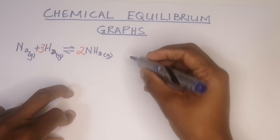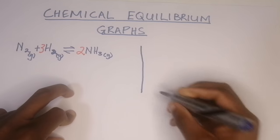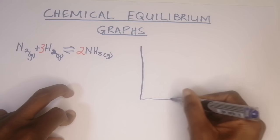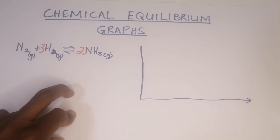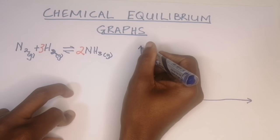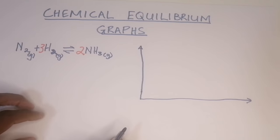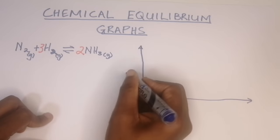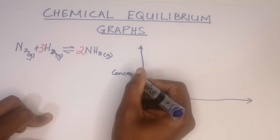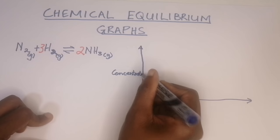There are two types of graphs you will always find in chemical equilibrium. The first type has to do with amounts — it could be concentration, number of moles, or volume. I'm going to take a graph of concentration plotted against time.